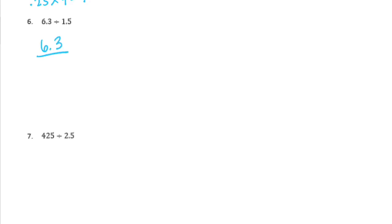6 and 3 tenths divided by 1 and 5 tenths. Let's make the 1 and 5 tenths into a whole number. We can do that by multiplying by 2. 1 and 5 tenths times 2 is 3. 6 and 3 tenths times 2. Well 6 times 2 is 12, and 3 tenths times 2 is 6 tenths. So 12 and 6 tenths divided by 3. I can split this up. 12 divided by 3 gets me 4. And then 6 tenths divided by 3 would get me 2 tenths. So if I add those together, I get 4 and 2 tenths.